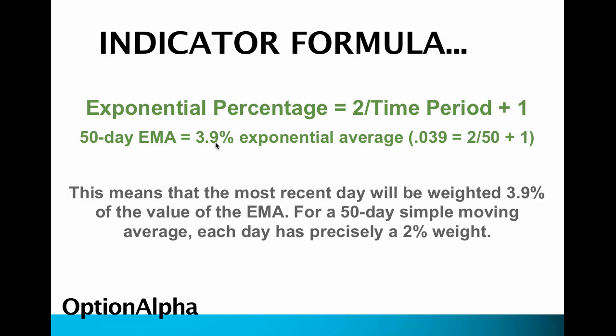What this means is that the most recent day will be weighted 3.9% of the value of the EMA — weighted much higher, not as an equal percentage. For a 50-day simple moving average by contrast, each day that passes has a 2% weight.